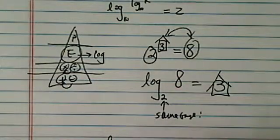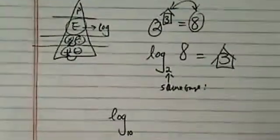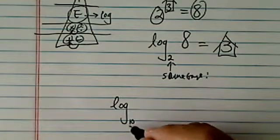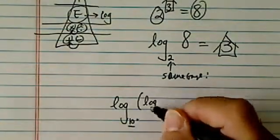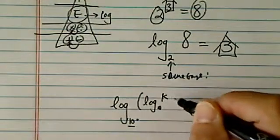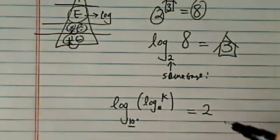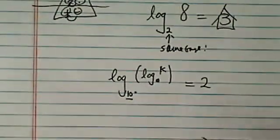So let's take a look. Log base, if they didn't write anything as a base, then it's to be understood as a 10. Log base 10 of log base 10 of k, the whole thing equal to 2. It's a little complicated, but not too bad.